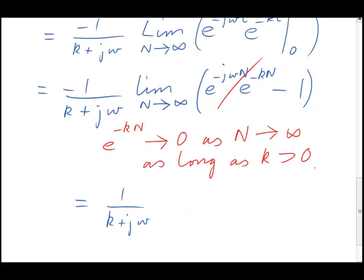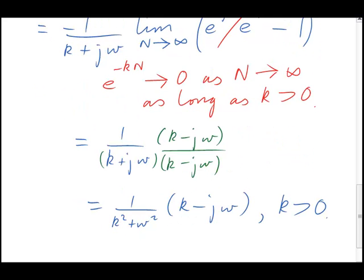Normally we don't like complex numbers in a denominator, so we should multiply top and bottom by the complex conjugate, to get a complex number that we recognize. Once we've done that, the denominator will simply expand out to give us k squared plus omega squared, a real positive quantity. That's the best form to present the Fourier transform. And notice that I've also mentioned, just as a reminder, that k is positive.